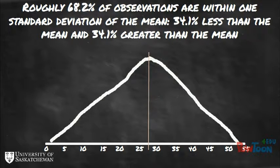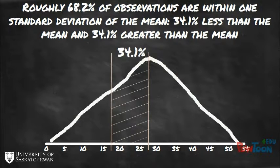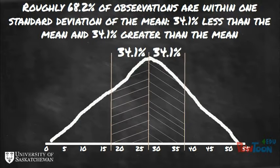If the data set is normally distributed, 68.2% of the observations are within one standard deviation from the mean — 34.1% less than the midpoint and 34.1% greater than the midpoint.